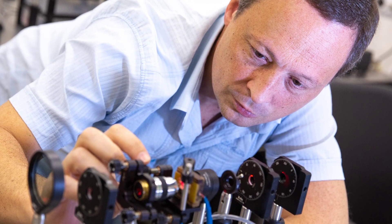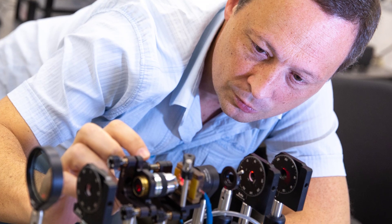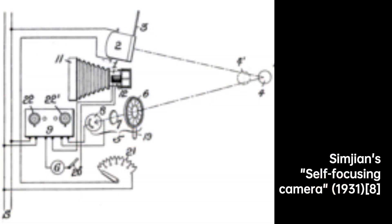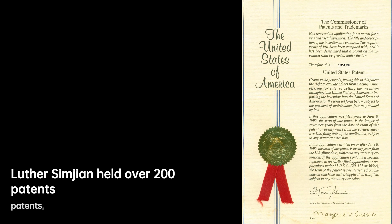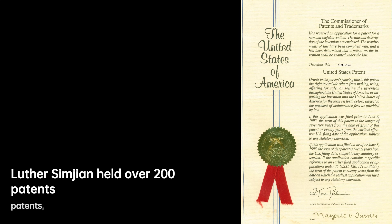But Simjian's genius didn't stop there. He is also credited with arguably inventing the first automated teller machine, or ATM. His vision was to create a device that would allow individuals to withdraw cash anytime, anywhere. Although his invention, called the Bankograph, was not widely adopted at the time, it laid the foundation for the modern-day ATMs that we rely on today.